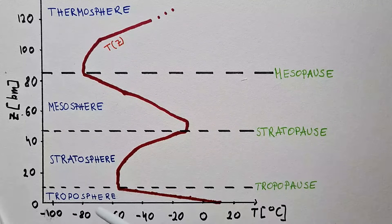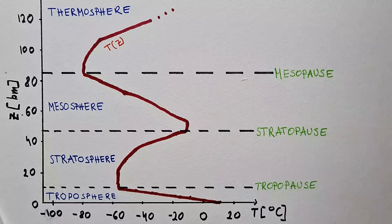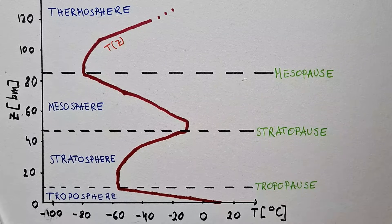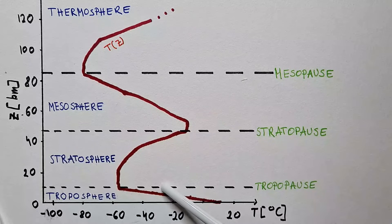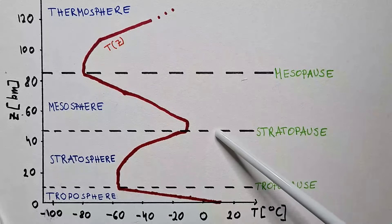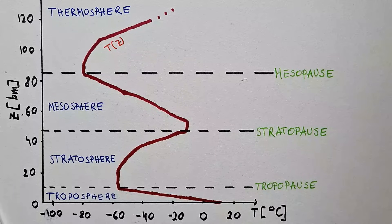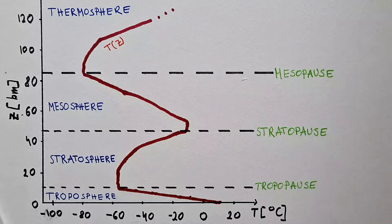The troposphere is about 11 kilometers deep on average, but that is not everywhere around the world. The depth of the troposphere is around 9 kilometers in the polar regions and around 17 kilometers in the tropical regions. This has to do with the fact that pressure decreases faster in cold air than in warm air. In our video on the hypsometric equation, we said that pressure surfaces are further apart if the air between them is warm than if it is cold — and that is why the troposphere is deeper in the tropics than in the polar regions. I suggest you check my video on the hypsometric equation.